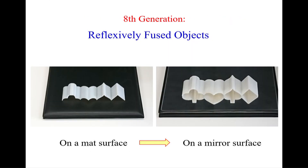The eighth generation is a reflexively fused object, in which the direct view of the object looks like nonsense, but if we put it on a horizontal mirror, the object shape and its mirror image altogether give a complete shape of meaning.